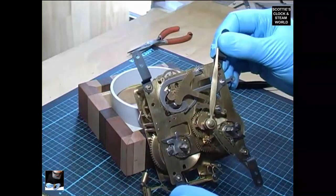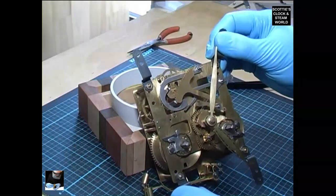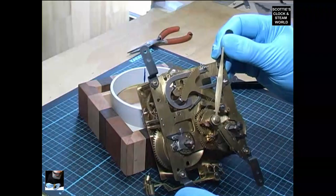Take the hands off the movement and put the movement back into the clock. Put the face on, then the hands, and then we'll check it again with the chime.